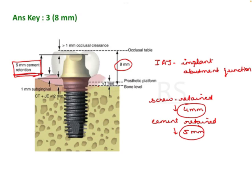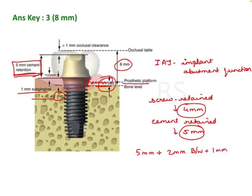Then 1mm is the prosthetic platform at the bone level — from the bone to the abutment, this area, the platform is approximately 1mm. And the total biologic width that is desirable, which is sub-gingival, is 2mm. So we have 5mm of cement-retained restoration, plus 2mm of biologic width including the junctional epithelium and connective tissue, and 1mm of the abutment platform.